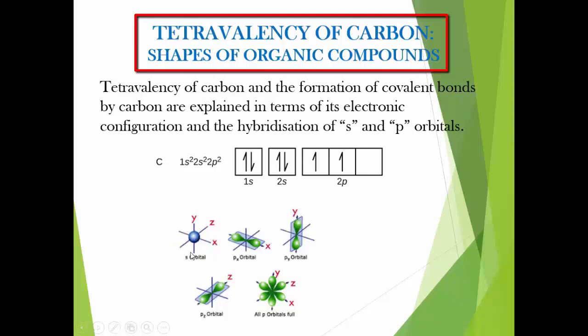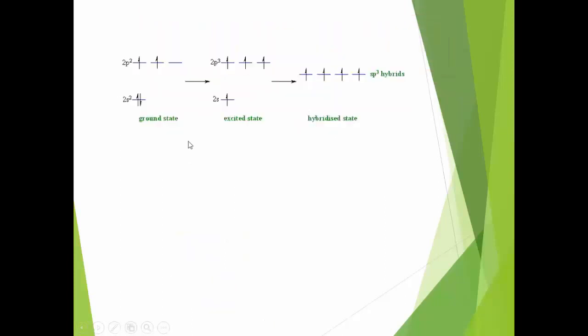S orbital is spherical in nature. Then the p orbitals - they are dumbbell shaped. According to the orientation of the dumbbell, there are three types of p orbitals: px oriented towards x axis, py towards y axis, and pz towards z axis.